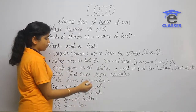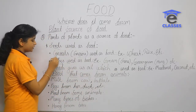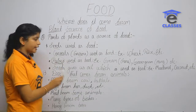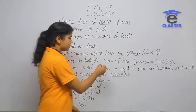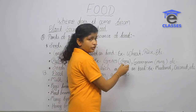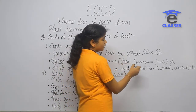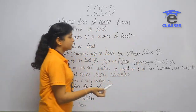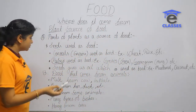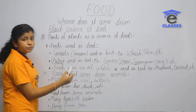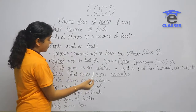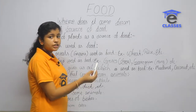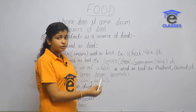Pulses are also used as food. Examples include gram, chowla, green gram, and mugga (moong), etc. Pulses are rich in proteins.